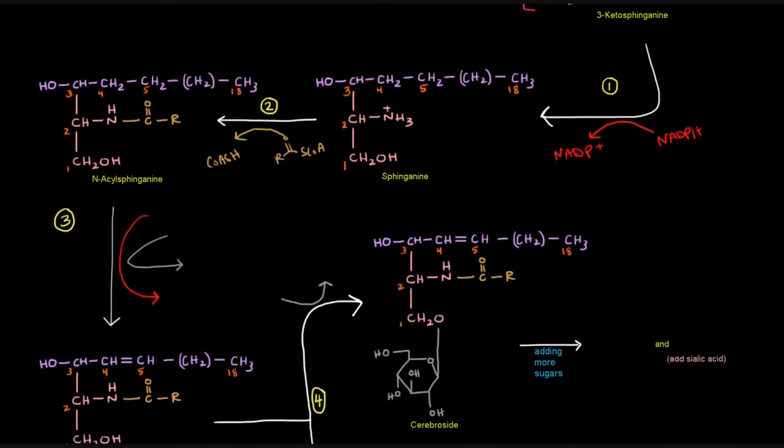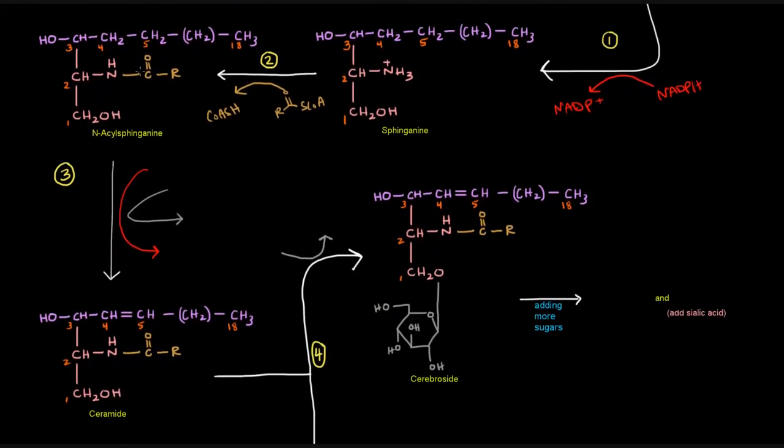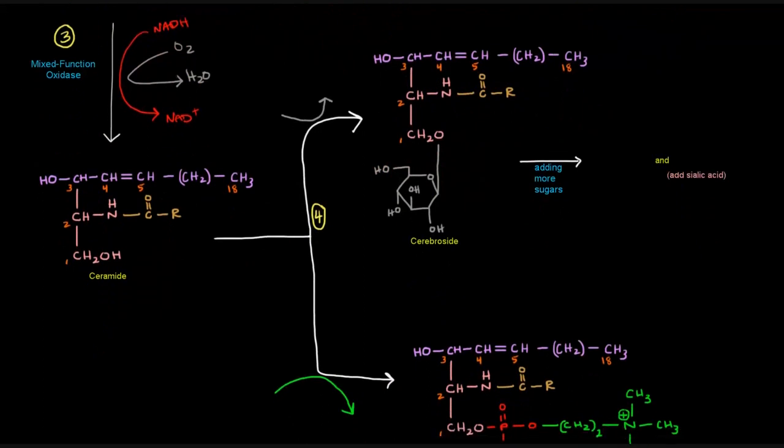Step three is going to be inputting the desaturation between carbons four and five. Right here, there's a single bond that we're starting off with. We need that to be a double bond. The enzyme that's going to accomplish that is called a mixed-function oxidase, which we've mentioned a couple times before. That requires NADH as well as molecular oxygen. That will give us ceramide, which is the parent compound of sphingolipids.